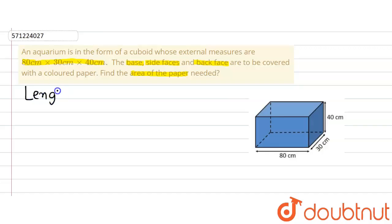We are given the length of the cuboidal aquarium which is 80 centimeter, breadth or width of the cuboidal aquarium which is 30 centimeter and height which is 40 centimeter.